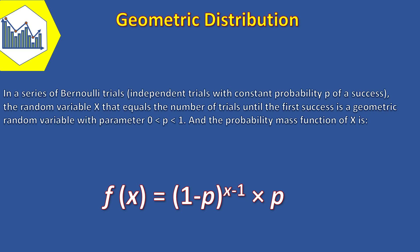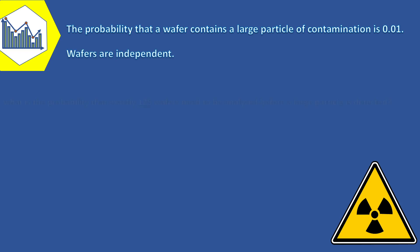Now since we know what the probability mass function of geometric distribution is, let's see a simple example of it. The probability that a wafer contains a large particle of contamination is 0.01. If it is assumed that the wafers are independent, what is the probability that exactly 125 wafers need to be analyzed before a large particle is detected?